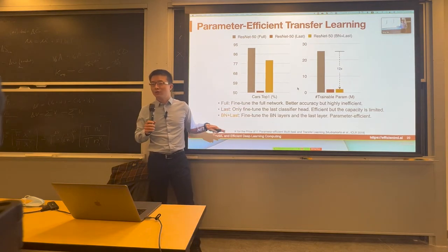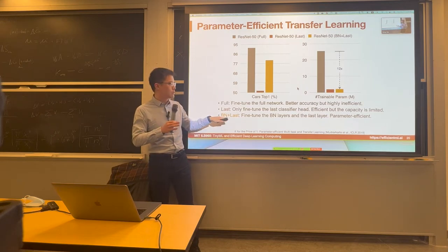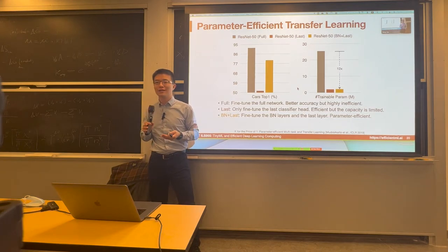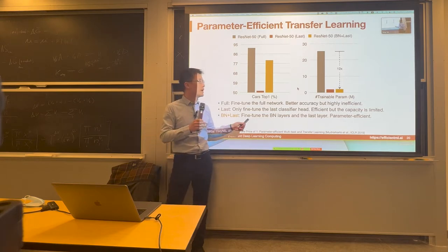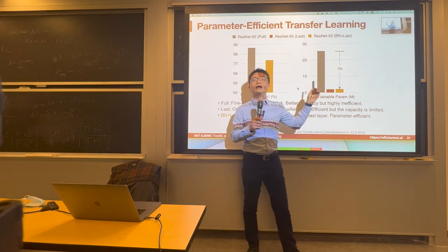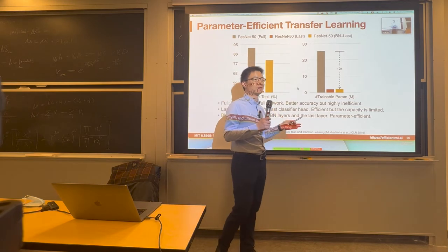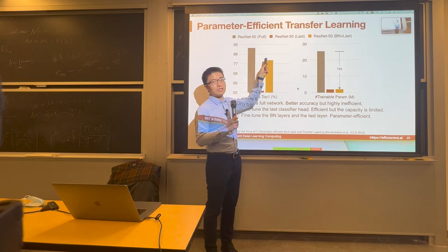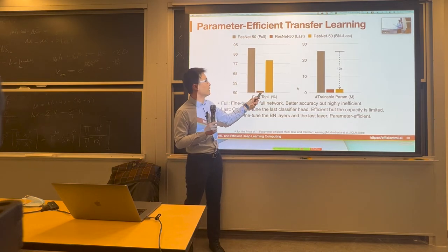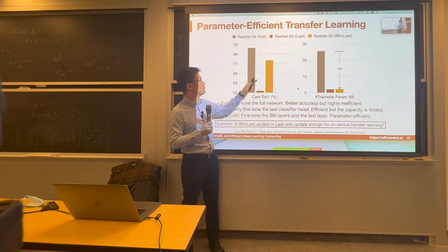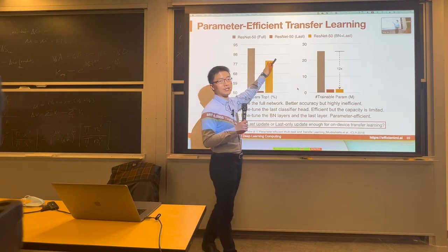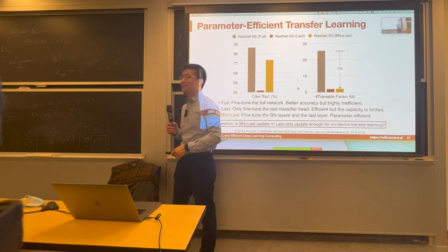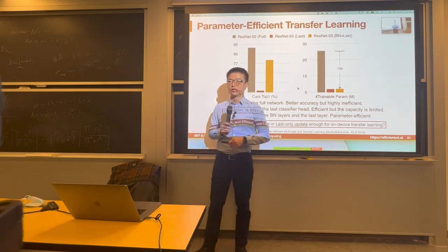People then proposed other alternatives. A line of work called BN+last fine-tunes the batch normalization layer. In batch normalization there is a scaling factor and a bias, which is a simple operation with not many parameters to tune. That can lead to significant reduction — about 12x — in trainable parameters, and accuracy is okay. It's better than fine-tuning the last layer only, but there's still a big drop compared with fine-tuning the full model. So is this enough? Looks like we have decent accuracy and huge savings in parameters. Is that solving our on-device transfer learning problem?